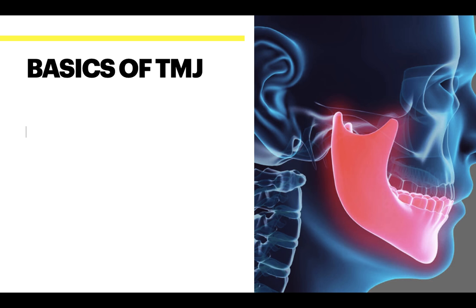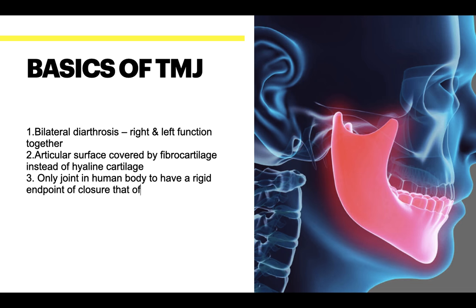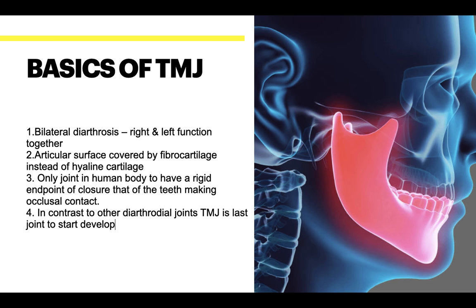Basics of TMJ: it is a bilateral diarthrosis — the right and left joints function together. The articular surfaces are covered by fibrocartilage instead of hyaline cartilage. It is the only joint in the human body to have a rigid endpoint closure — that of teeth making occlusal contact. In contrast to other diarthrodial joints, the TMJ is the last joint to start developing, at about seven weeks in utero.